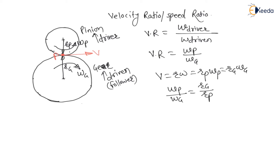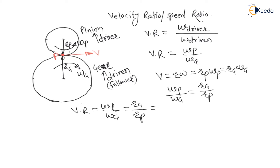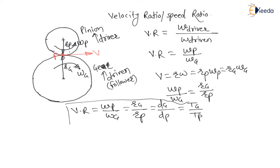Therefore, velocity ratio = ωp / ωg = Rg / Rp = Dg / Dp = Tg / Tp. This is called velocity ratio.